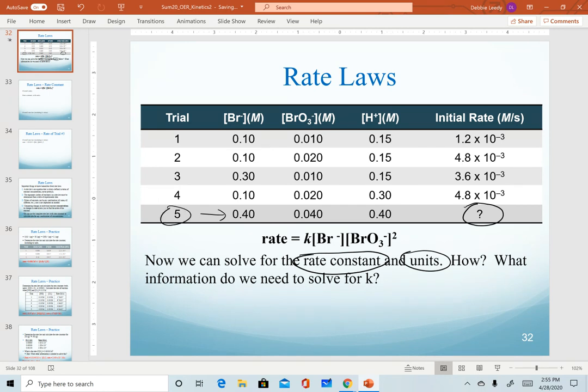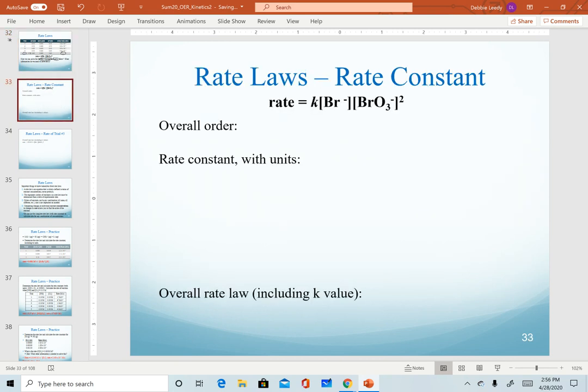Notice trial number five, we're given concentrations of reactants and we want to be able to solve for the initial rate. Before we solve for the rate constant, one other helpful piece of information that we can identify is what's called the overall order of a reaction. To do this, we simply add up the exponents.